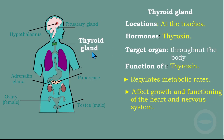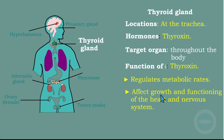Next is the thyroid gland. The location of the thyroid gland is at the trachea. The hormone it secretes is thyroxine. The target is throughout the body — this hormone doesn't have a specific target organ. The functions of thyroxine are to regulate metabolic rate (which relates to respiration), and it affects growth and functioning of the heart and nervous system.